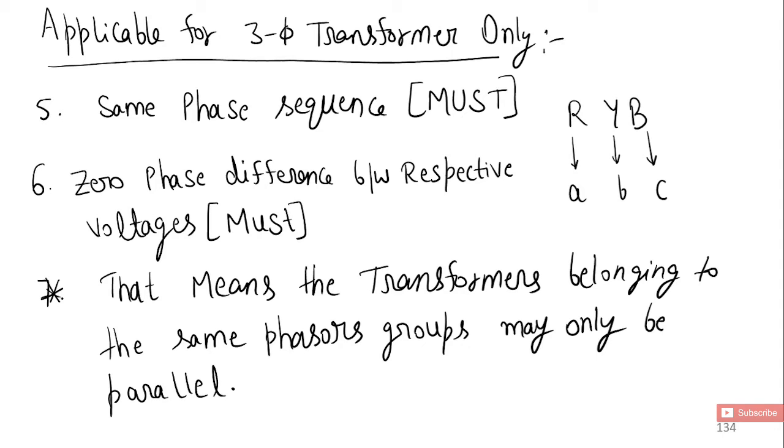Applicable for three-phase transformer only, there are a few conditions. Same phase sequence - this is must. Phase sequence may be R Y B or A B C. If A B C means B C A, this is also same, or you can say C A B. This is same phase sequence.